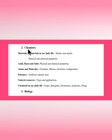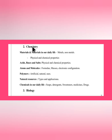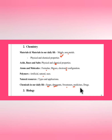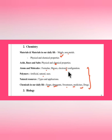Moving to chemistry: Materials in our daily life — metals and non-metals, physical and chemical properties; Acids, bases and salts — physical and chemical properties; Atoms and molecules — formulae, masses, electronic configuration; Polymers — artificial, natural and their uses; Natural resources — types and applications; and Chemicals in our daily life — soaps, detergents, sweeteners, medicines and drugs. The questions in chemistry will be simple compared to the GPS exam, but working hard to prepare will make them straightforward.